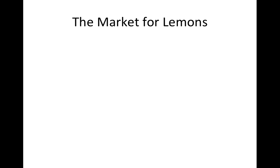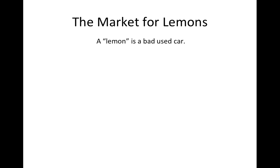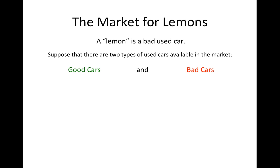The classic example of the hidden information problem is the market for lemons. Usually, this market is used to describe the market for used cars — a lemon is a bad used car. Suppose that there are two types of cars available in the market: good cars and bad cars. Consumers are willing to pay a high price pH for a good car and a low price PL for a bad car.